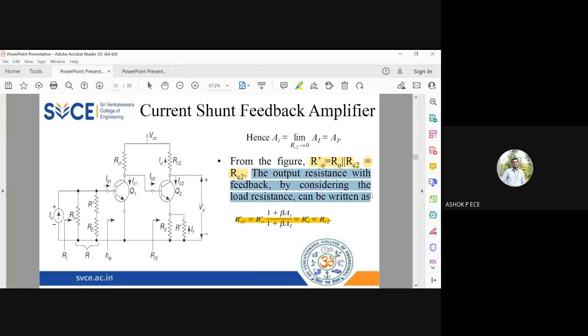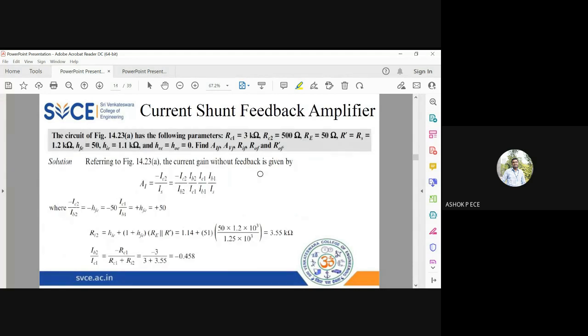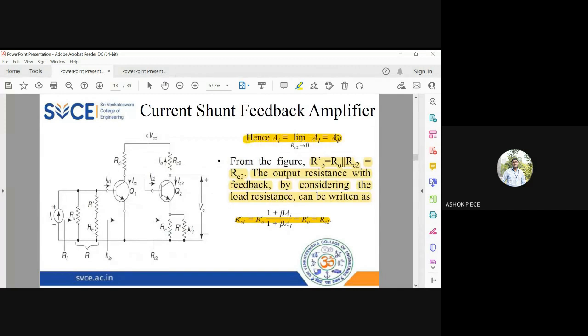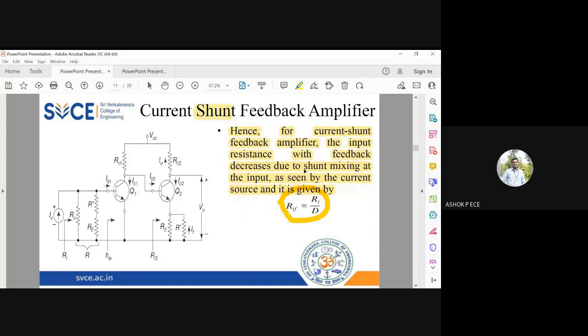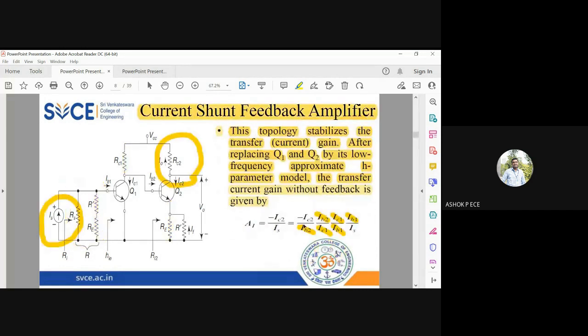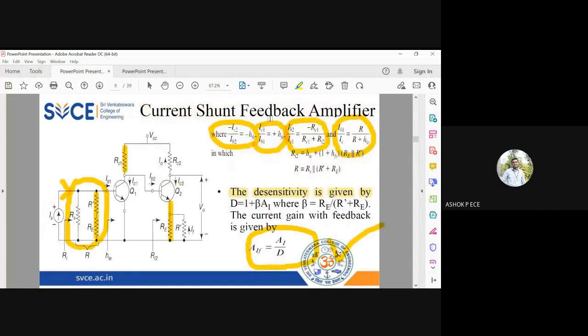In current shunt amplifier, you have nothing to simplify because it's a cascaded stage of two common emitter amplifiers and you have big expressions which will never get simplified. So you should clearly write what is the expression. Same way what you see in current gain - write the expression for current gain. By simplifying and substituting all the expressions in the required equation, you will get the expression for aif.